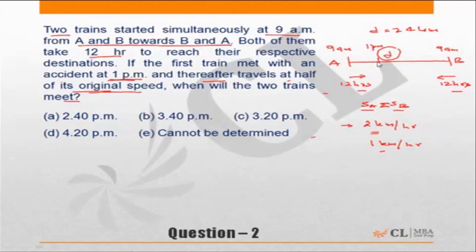So at 1 p.m., how much distance has been covered? 1 p.m. means 9 to 1 p.m.—4 hours. That means 8 kilometers has been covered by the first train, and also the second train at 1 p.m. would have covered 8 kilometers. So 16 kilometers have gone, and 8 kilometers is the distance between the two trains.